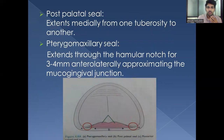The posterior palatal seal area extends medially from one tuberosity to the other. The pterygomaxillary seal area extends to the hamular notch for three to four millimeters, and laterally approximating the mucogingival junction.